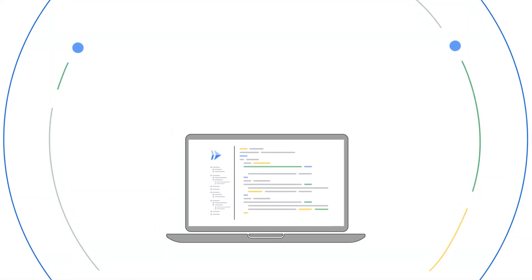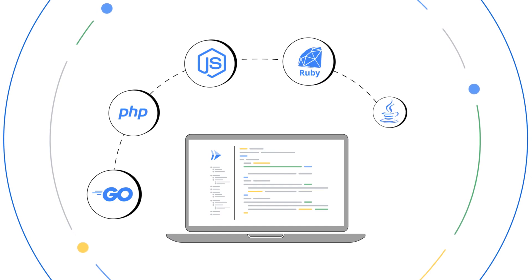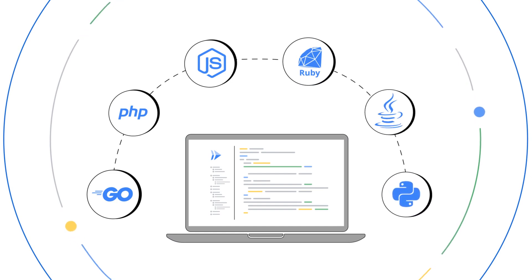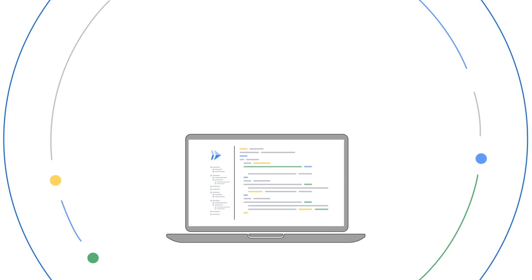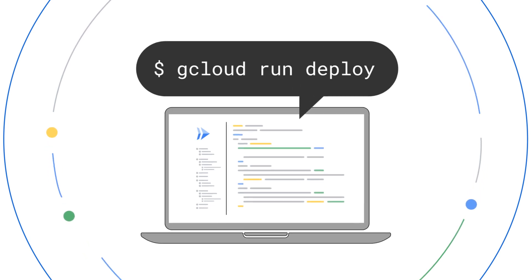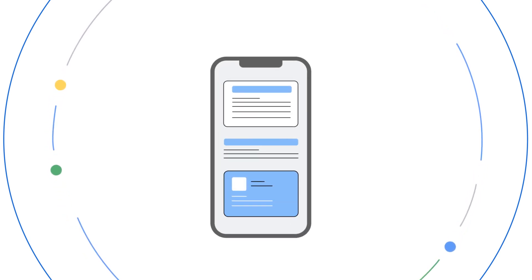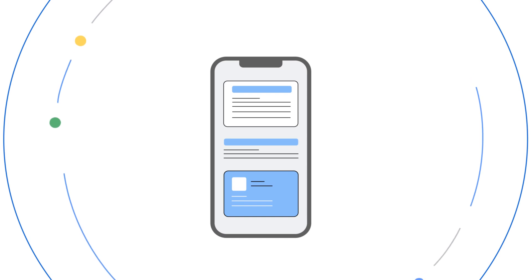You can write code using your favorite language, framework, and libraries, package this up as a container, run gcloud run deploy, and your app will be live, provided with everything it needs to run in production.